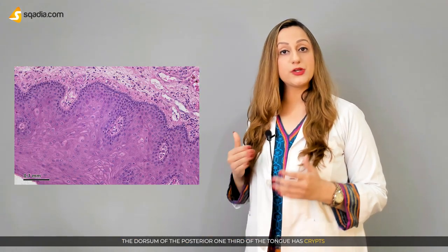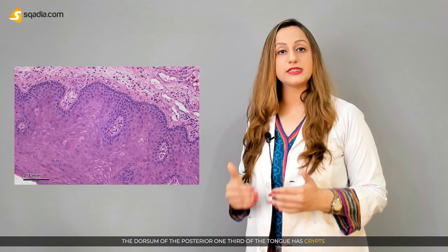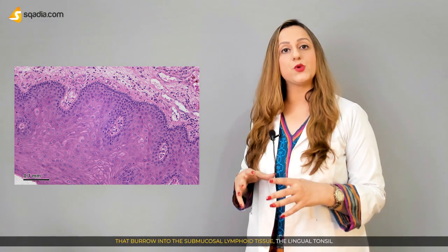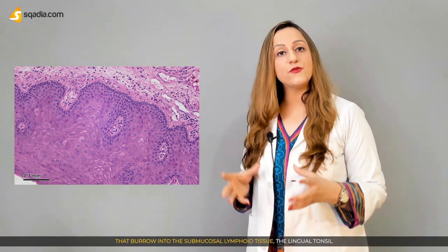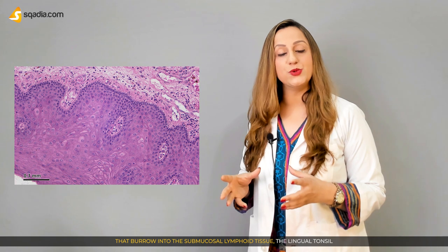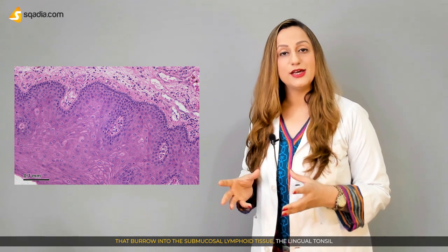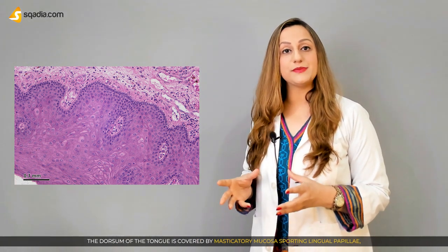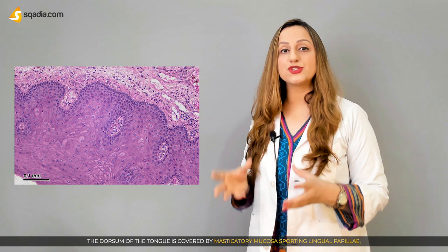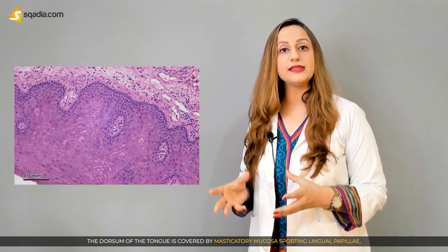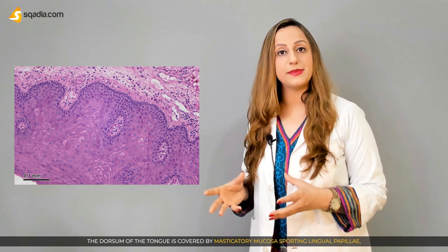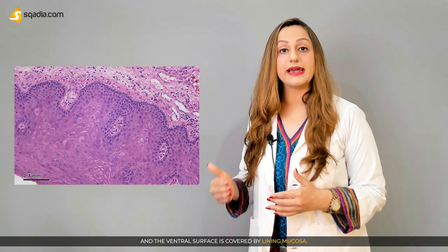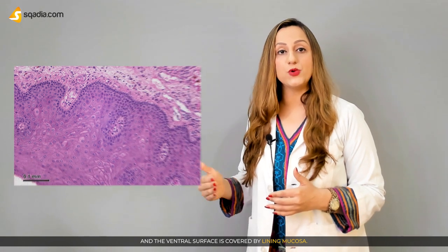The dorsum of the posterior one-third of the tongue has crypts that burrow into the submucosal lymphoid tissue, forming the lingual tonsil. The dorsum of the tongue is covered by masticatory mucosa sporting the lingual papillae, while the ventral surface is covered by the lining mucosa.